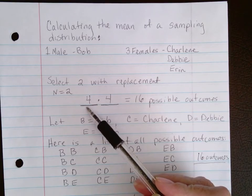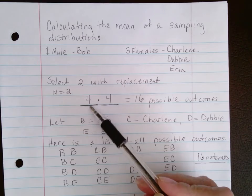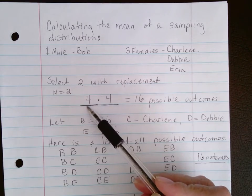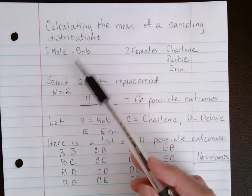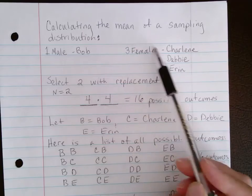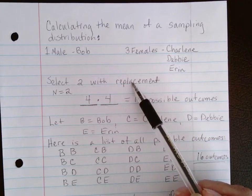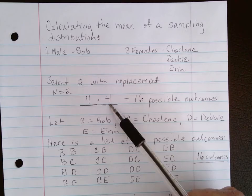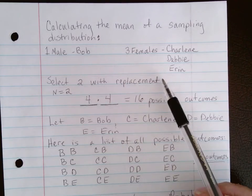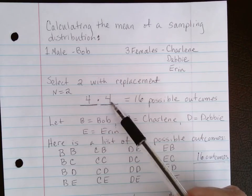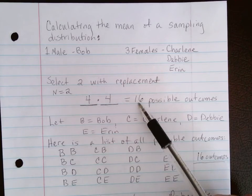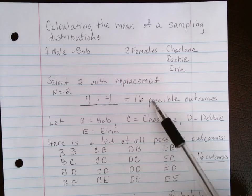By the fundamental counting principle, there are four possibilities for the first selection because there are four choices: Bob, Charlene, Debbie, and Erin. And since we're putting them back with replacement, the next selection also has four choices. So if we multiply these two together, we see that there are going to be 16 possible outcomes.